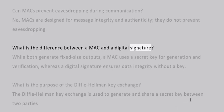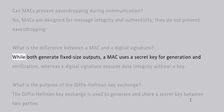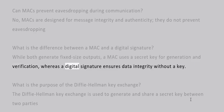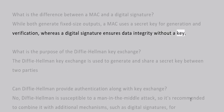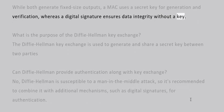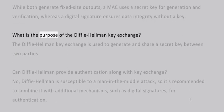What is the difference between a MAC and a digital signature? Both generate fixed-size outputs. A MAC uses a secret key for both generation and verification, whereas a digital signature ensures data integrity. What is the purpose of the Diffie-Hellman key exchange? The Diffie-Hellman key exchange is used to generate and share a secret key between two parties.